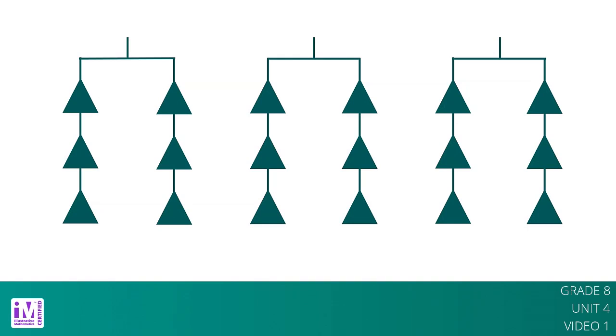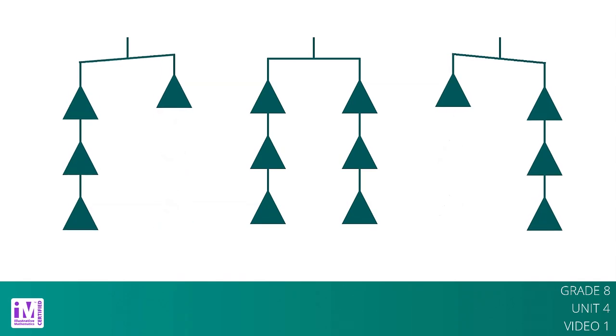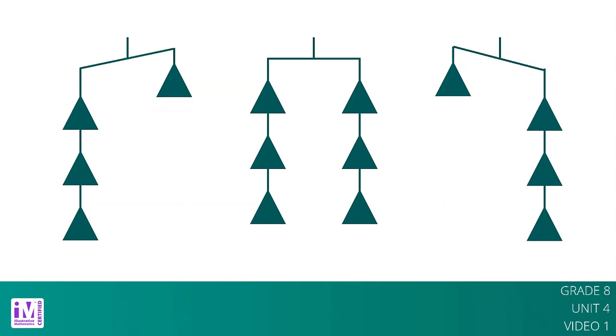We can think of a balanced hanger as a metaphor for an equation. If we have equal weights on the ends of a hanger, then the hanger will be in balance. If there is more weight on one side than the other, the hanger will tilt to the heavier side.